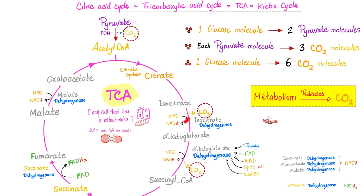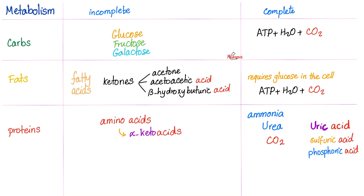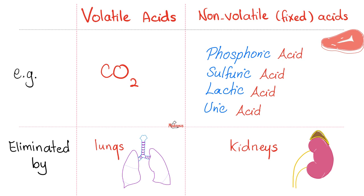Here is the TCA cycle secreting all kinds of acids. Metabolism secretes CO2. Here is the electron transport chain. You will end up with water. Carbon dioxide from the last slide plus water from this slide gives you carbonic acid. Your metabolism secretes acids, including carbon dioxide, including uric acid, sulfuric acid, phosphoric acid, all kinds of acids.